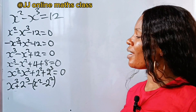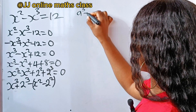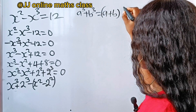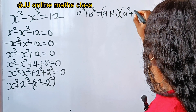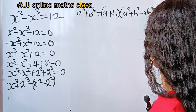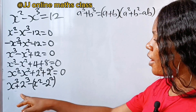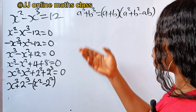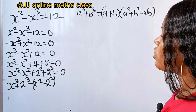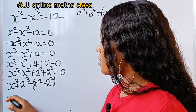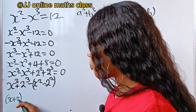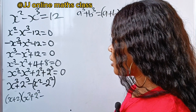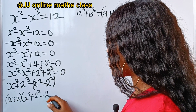Let's recall this algebraic identity: a to the power of 3 plus b to the power of 3 is equal to a plus b, multiplied by a squared plus b squared minus ab. In this case, our a is x and our b is 2. So we are going to substitute into this identity. We are going to have x plus 2, multiplied by x squared plus 2 squared minus 2 times x, that is 2x.